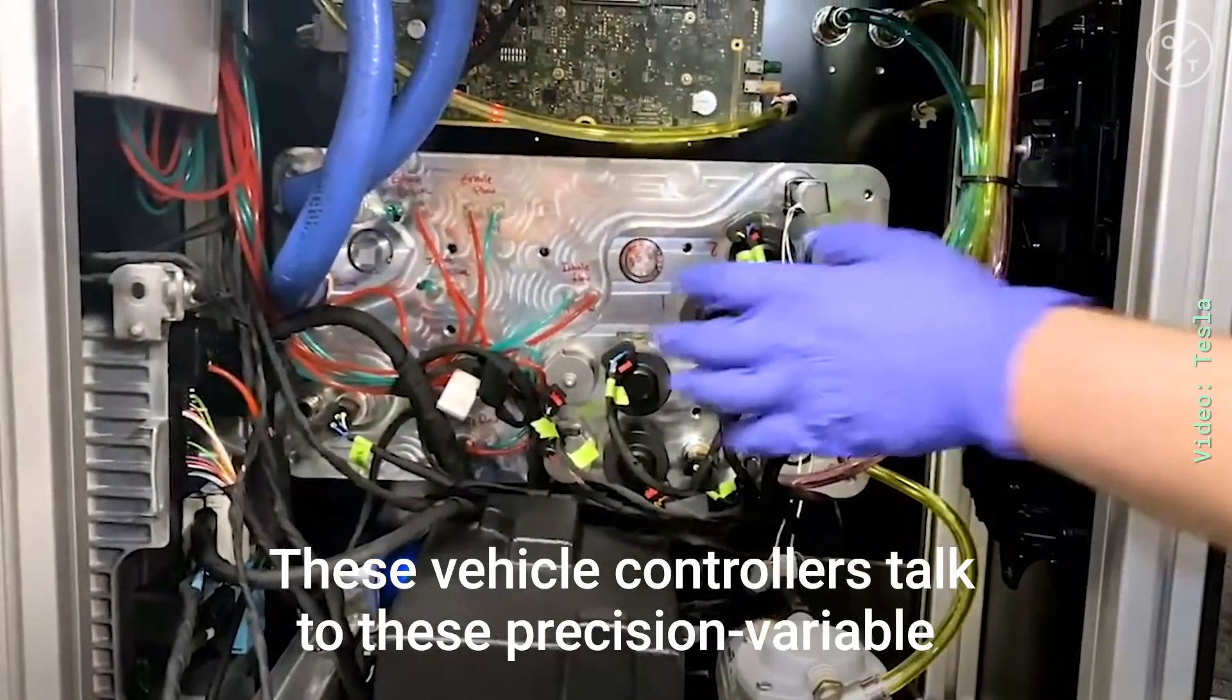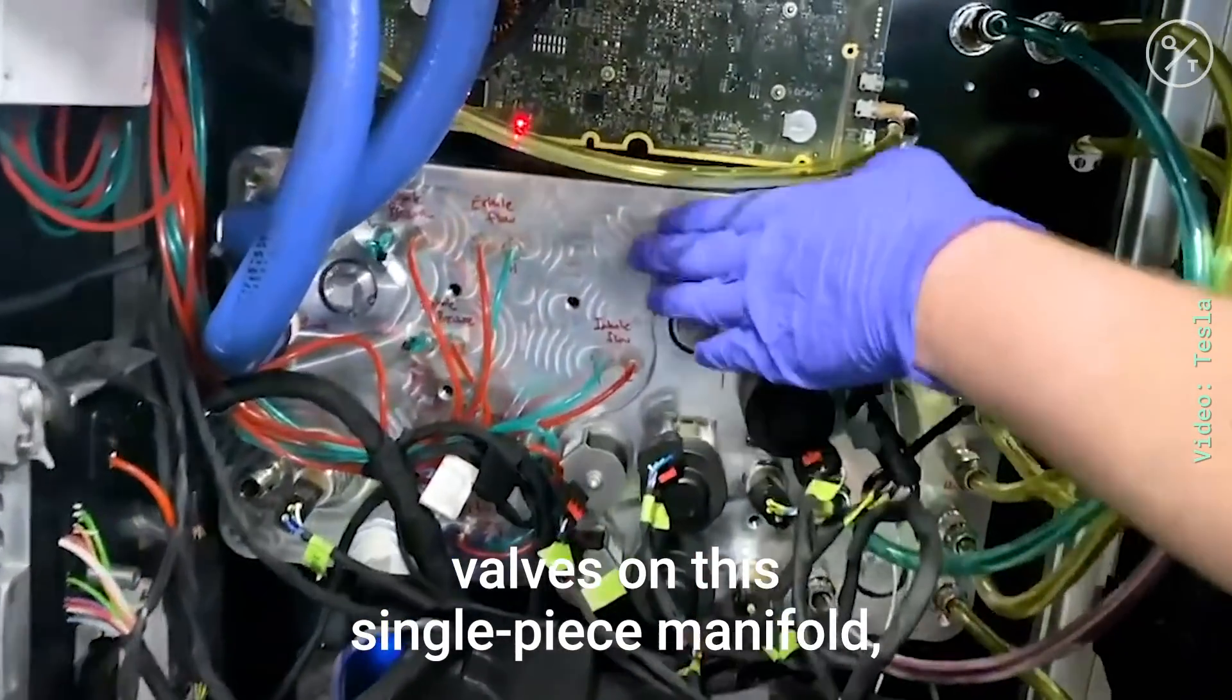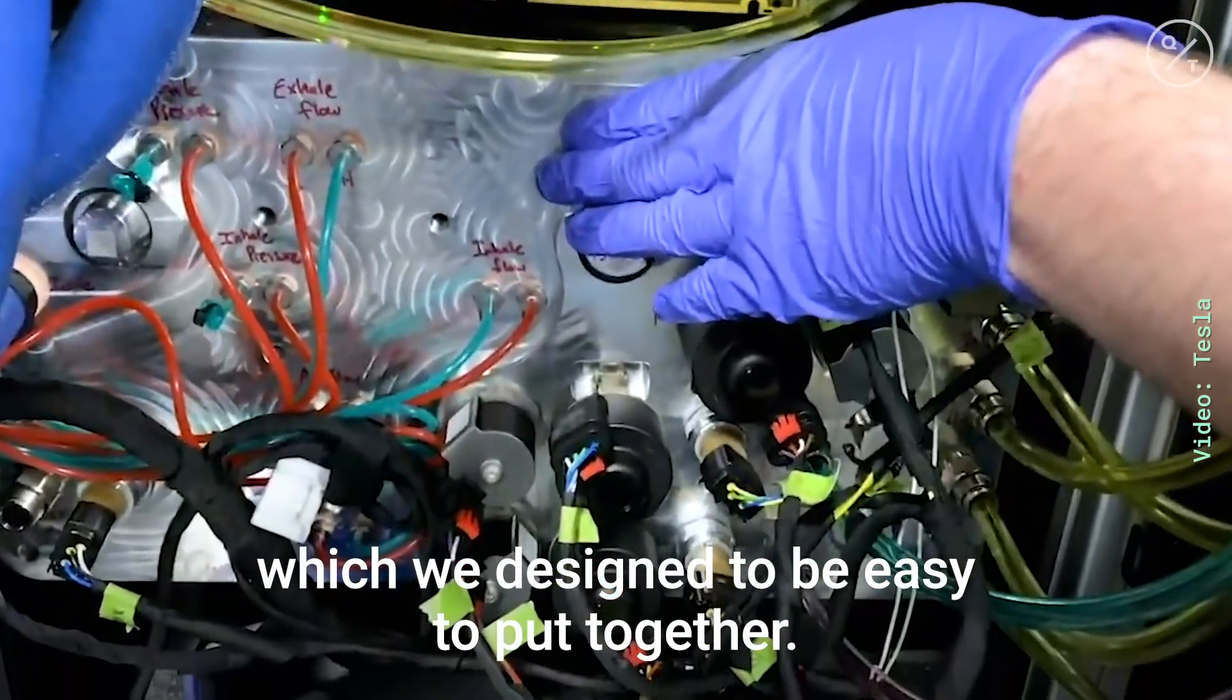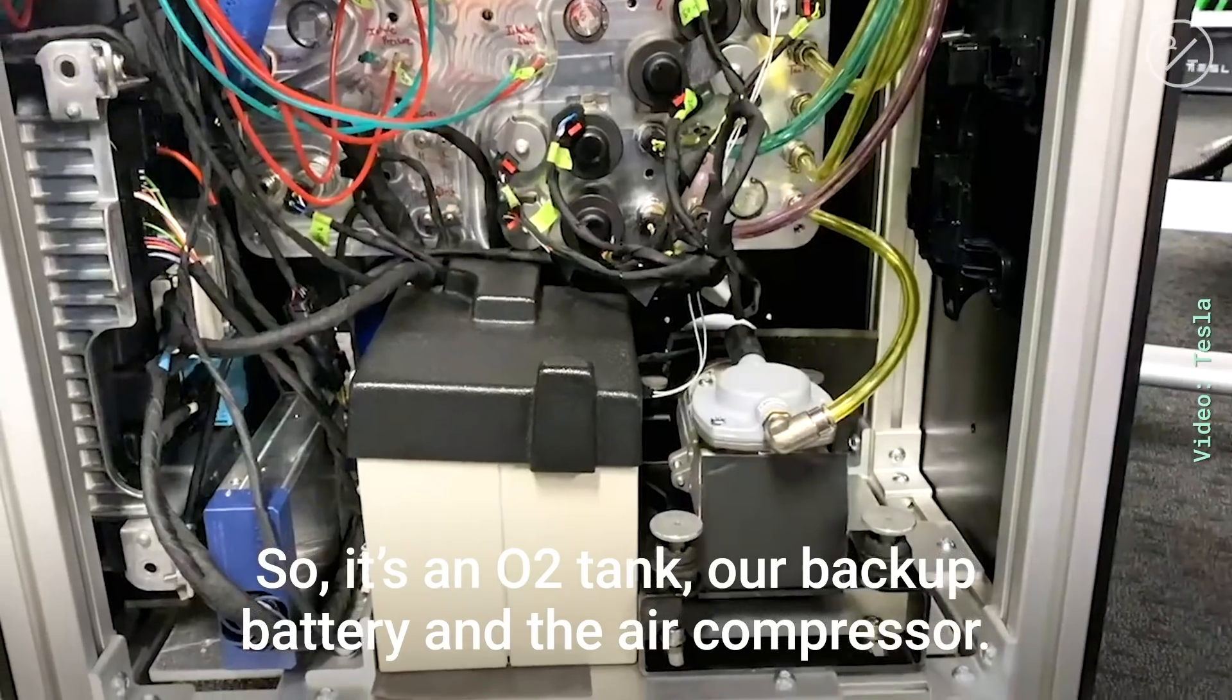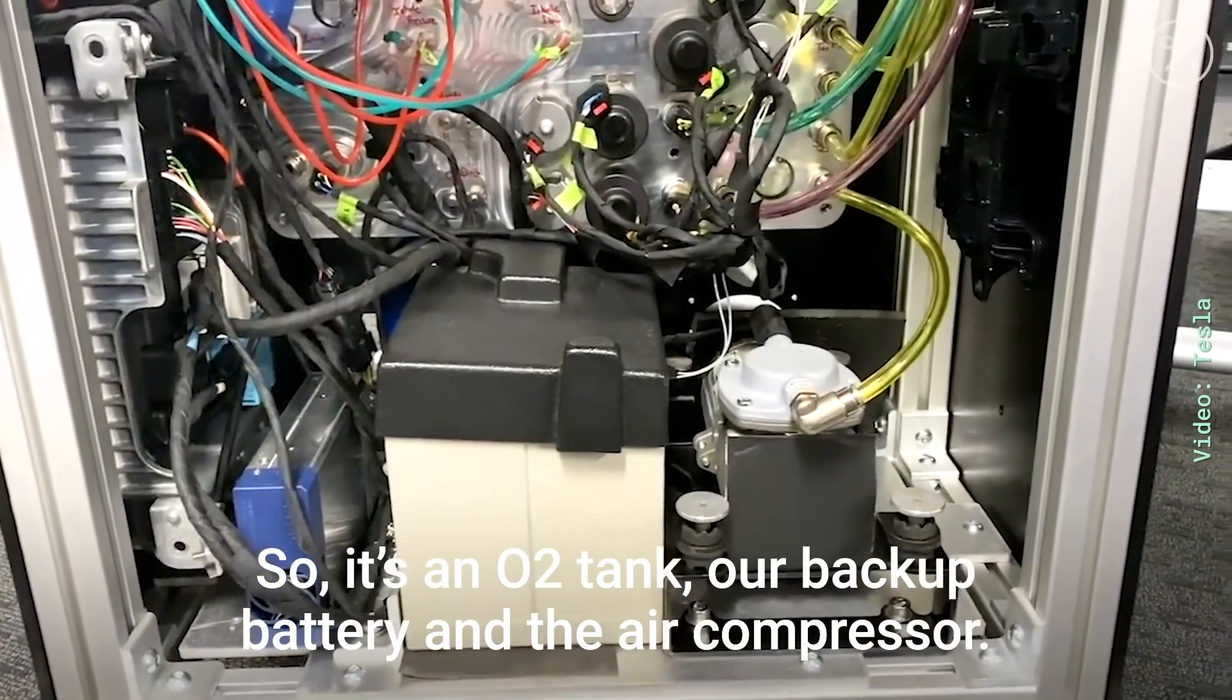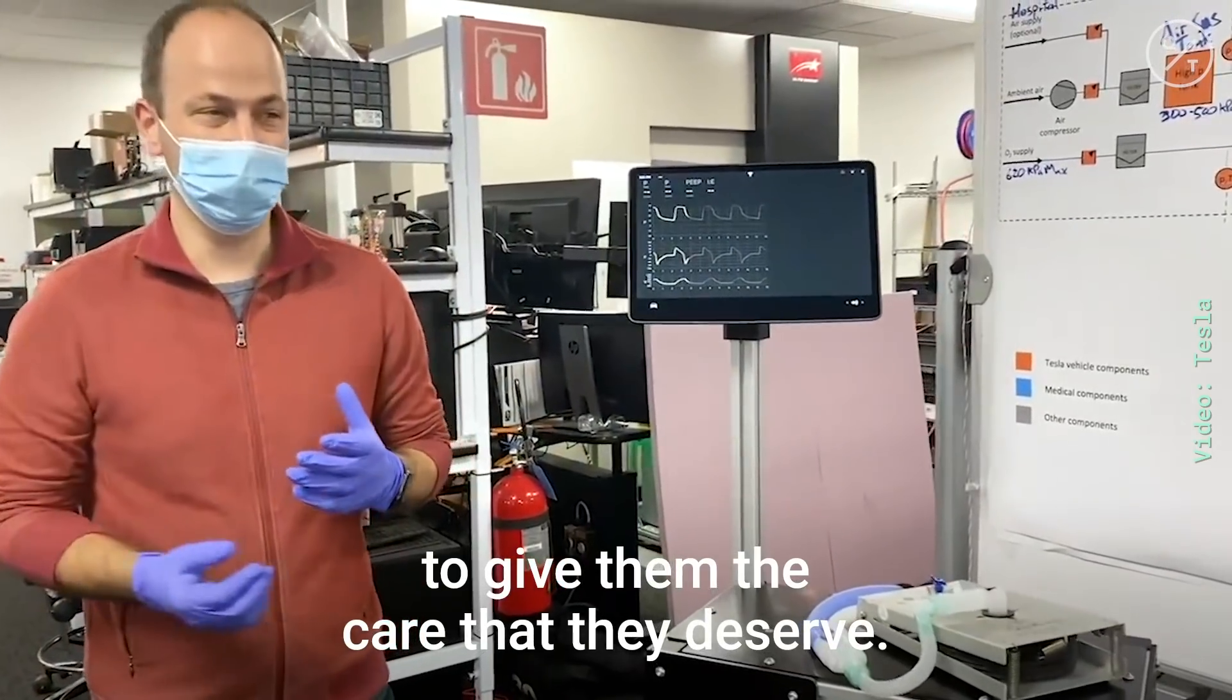These vehicle controllers talk to these precision variable valves on this single piece manifold which we designed to be easy to put together. We also put in on the bottom a backup system. So with an O2 tank, our backup battery and the air compressor, you get 20 to 40 minutes to move that patient where you need to give them the care that they deserve.